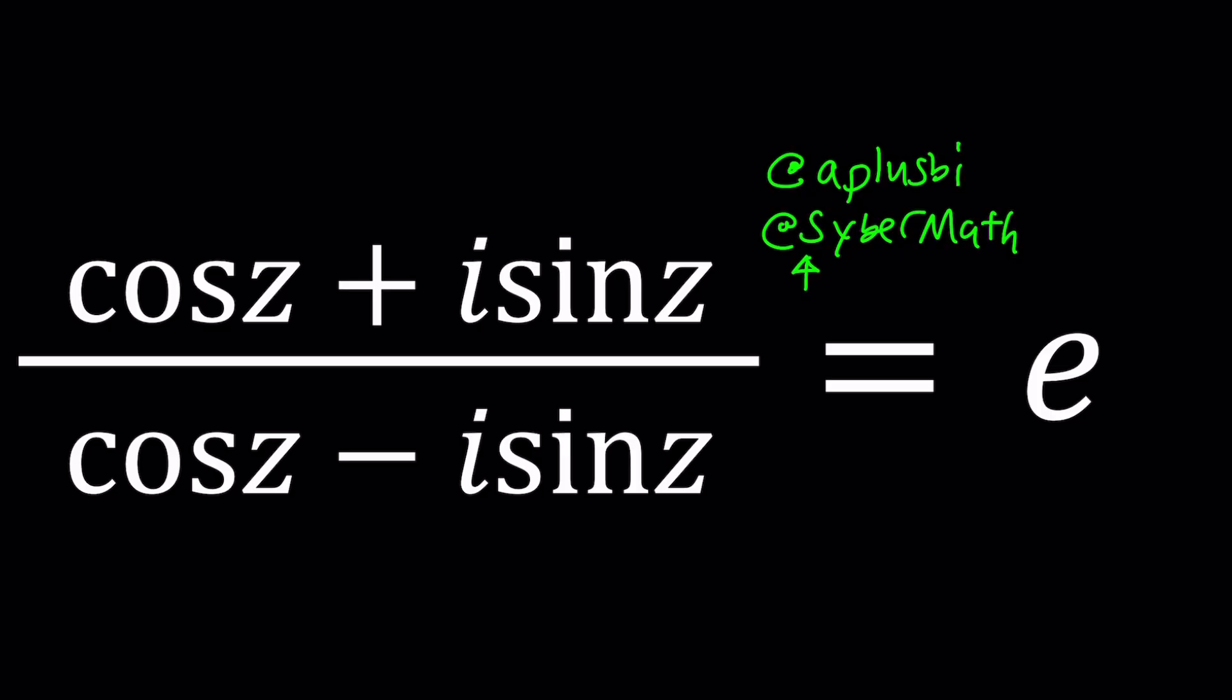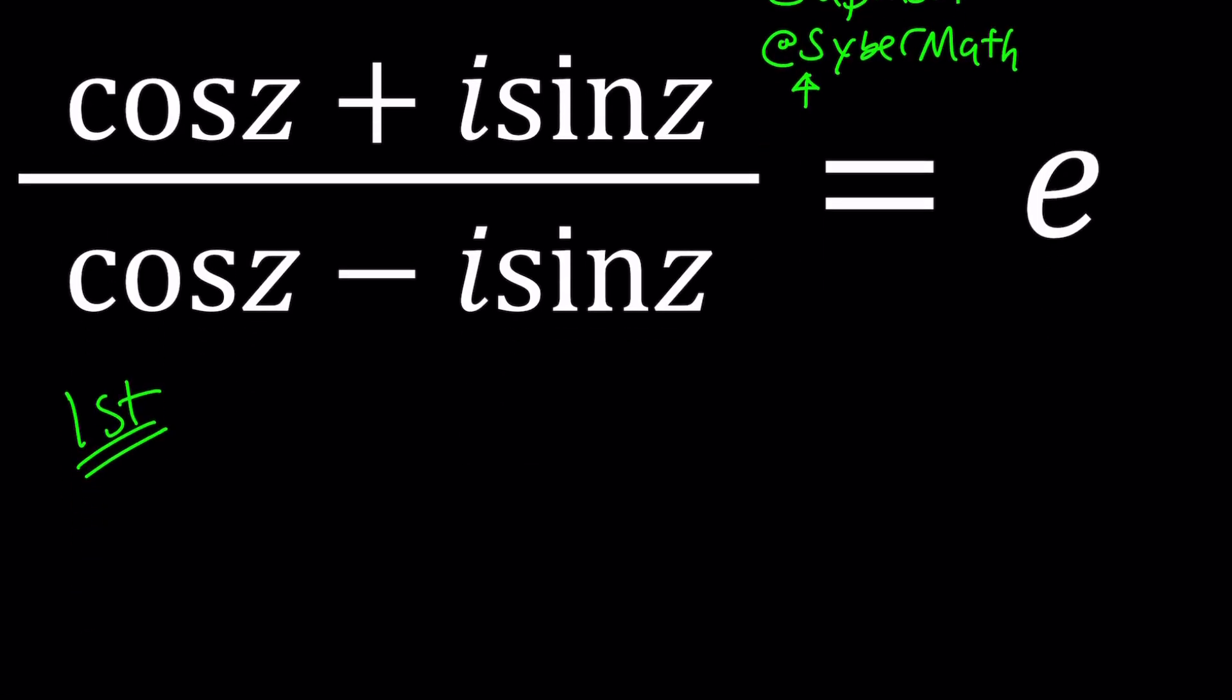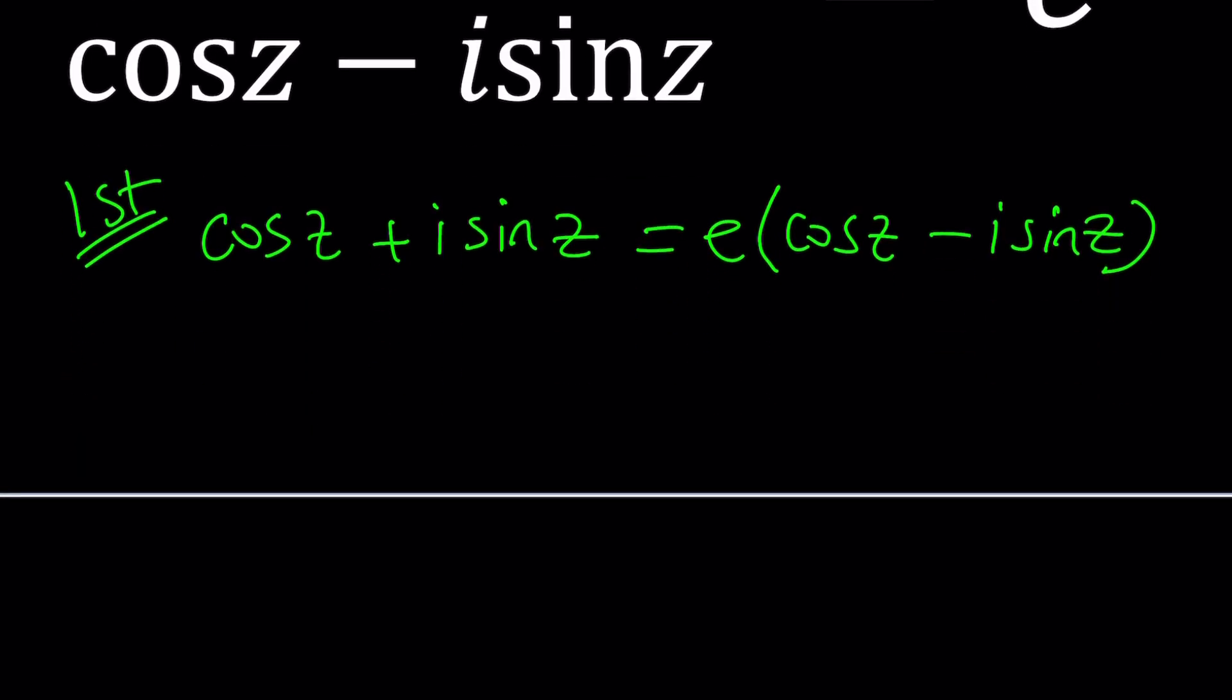Here is my first approach. I'm going to go ahead and cross multiply. So if you cross multiply, you get cosine of z plus i sine of z. I could probably introduce three methods. So go ahead and distribute this E. Our goal is going to be maybe put the cosines together and sines together and see where we can go from there.